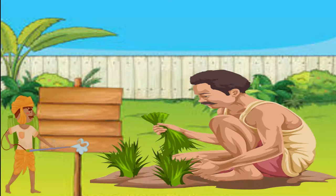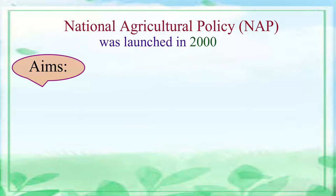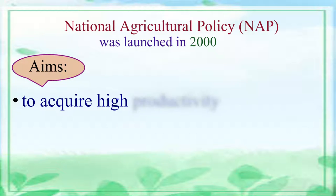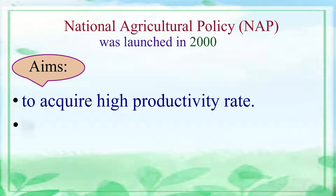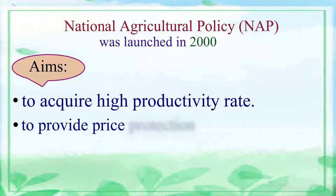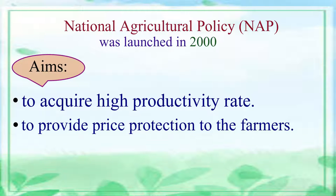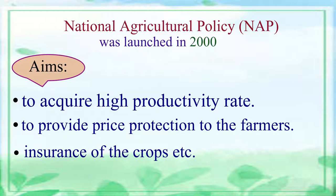To solve the agriculture related problems of the farmers, the government of India launched the National Agricultural Policy in the year 2000. It aimed to acquire a high productivity rate, to provide price protection to the farmers, and insurance of the crops, etc.